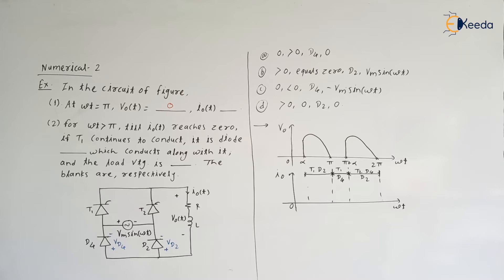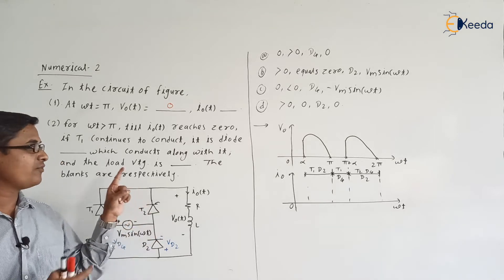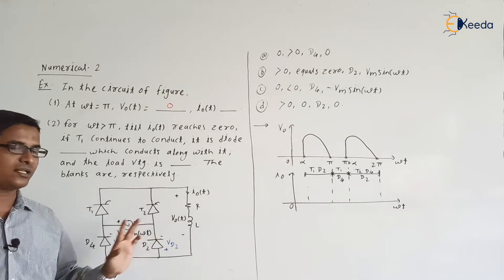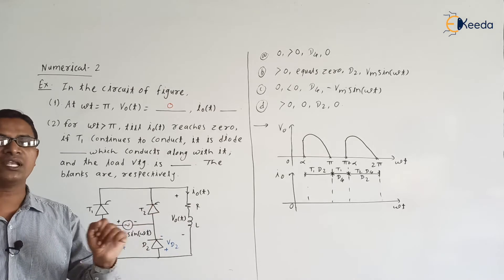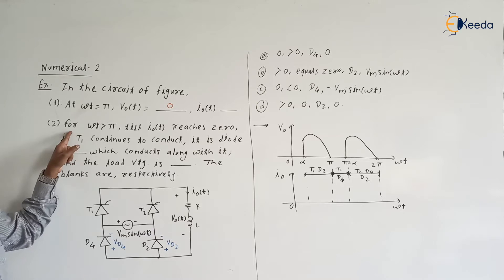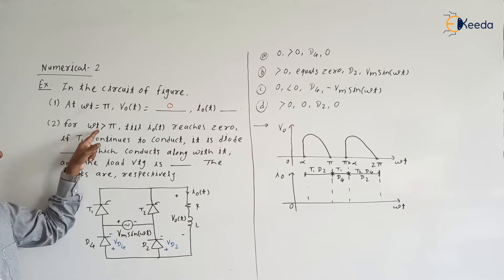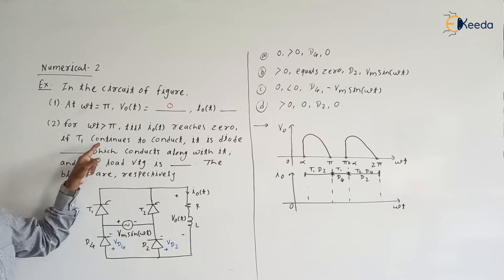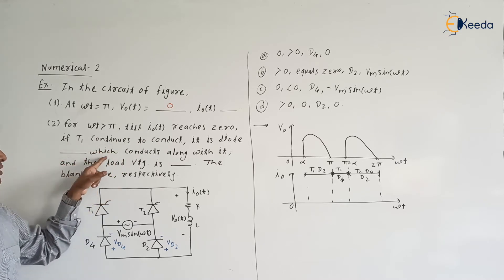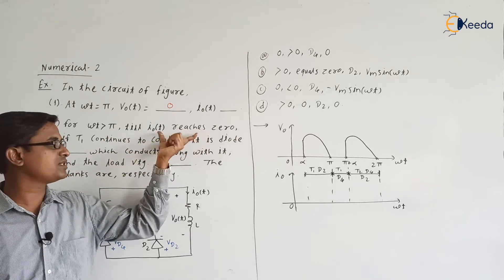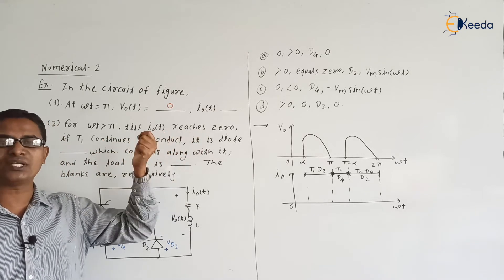Now we need to find I zero of t. The problem uses the phrase 'till I zero of t reaches zero,' which means it is discontinuous conduction. They have not specified the inductor value, so we consider the inductor has a lesser value, causing discontinuous conduction.